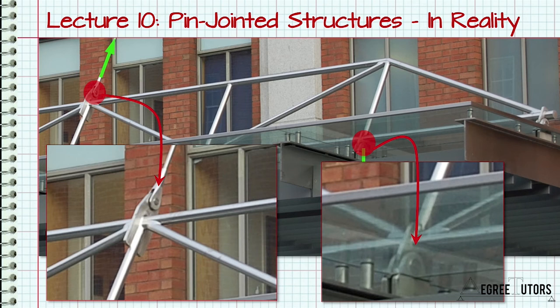If loads are applied between the joints, local bending of the members will occur and this bending will be transmitted through the joint to adjoining members. In this introductory course we won't consider internodal loading and will assume all joints behave as pins.